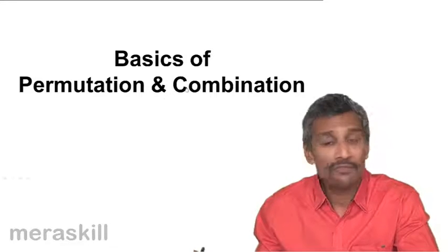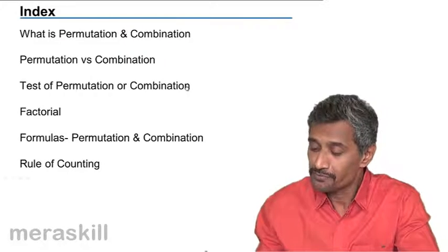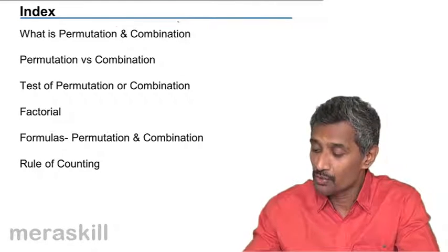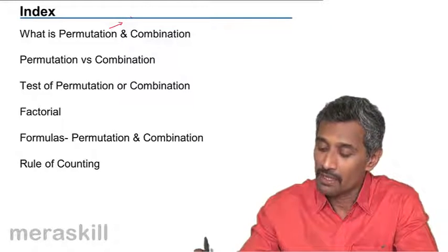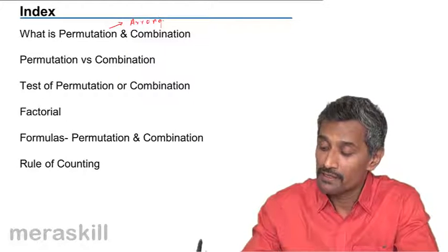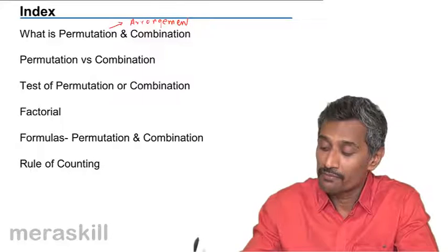We have the basics of permutation and combination. Now, what is permutation and combination? As I told, permutation is nothing but the arrangement of a certain number of items.